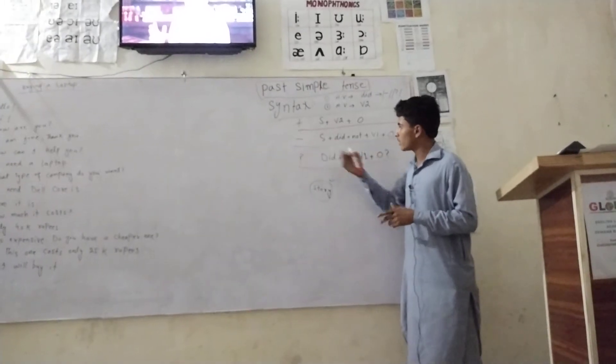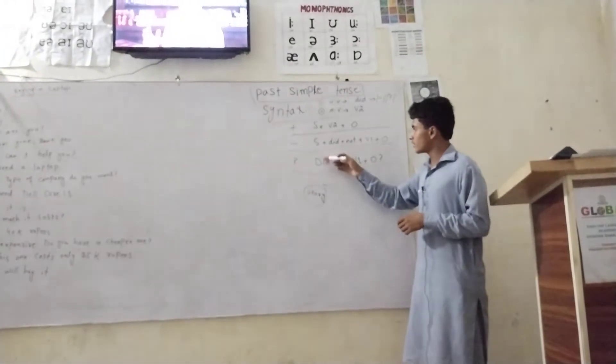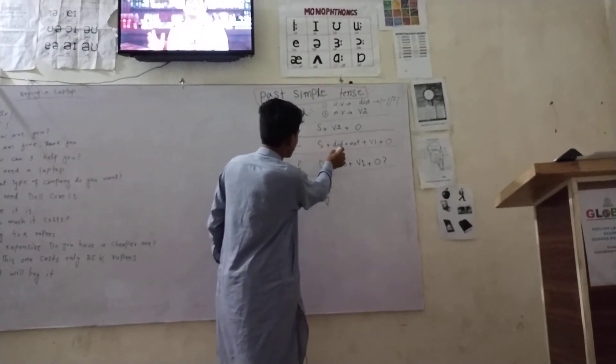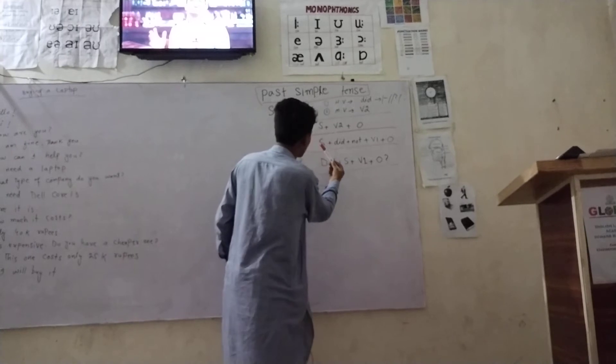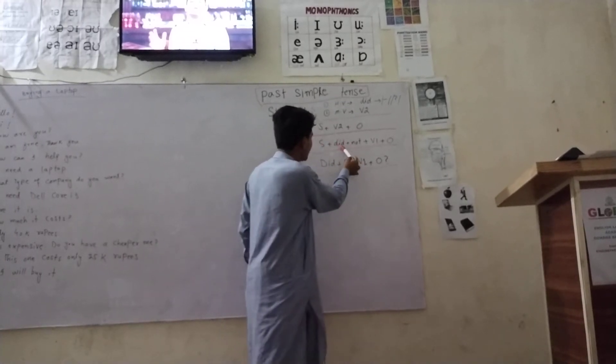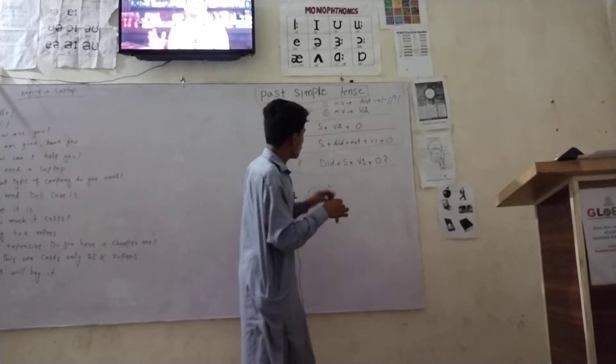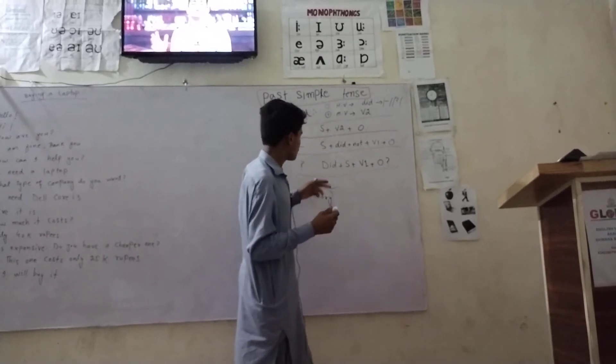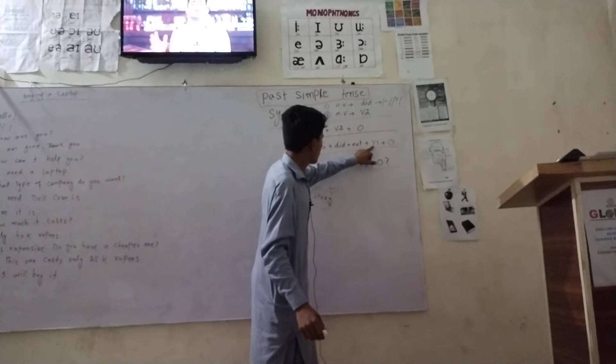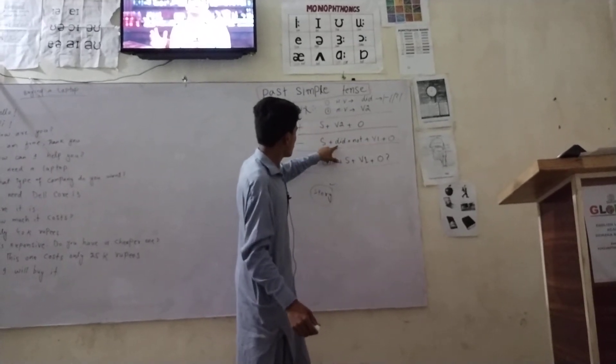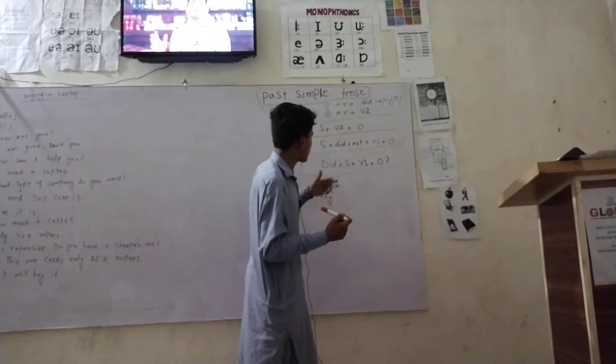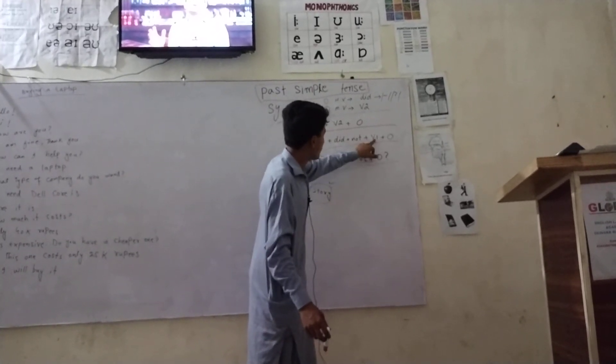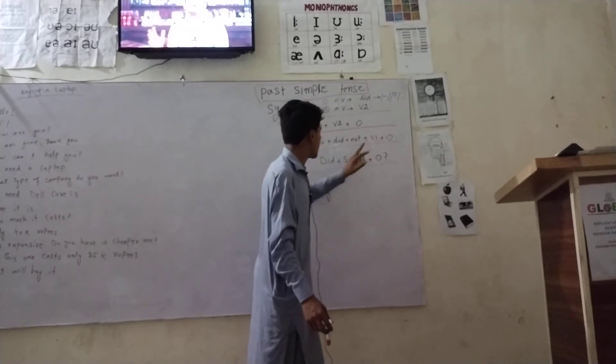After that, how to make negative sentences in this tense. First, at the beginning of the sentence, we write the subject. After that, for negative sentences, we write 'did not.' But when you use 'did,' did is already the second form of the verb. If you write 'did,' which is already the second form of the verb, don't use the second form of the main verb. In this case we use the first form of the verb, and after that the object.